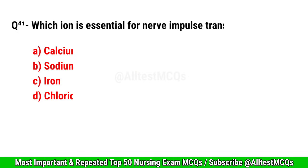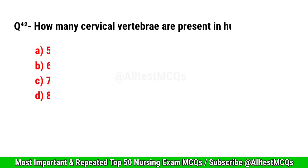Question No. 41. Which ion is essential for nerve impulse transmission? Right option is B. Sodium.